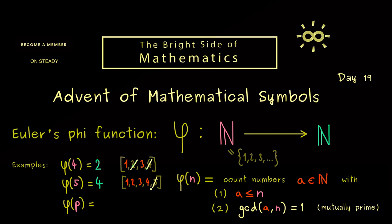In fact, with this reasoning here, we can immediately calculate φ(p) when p is a prime number. And now you know this should be p minus 1.